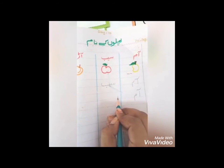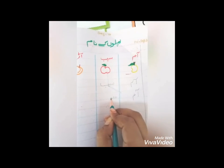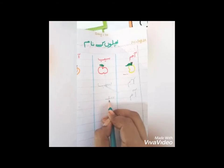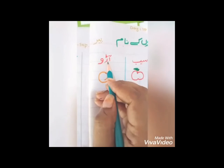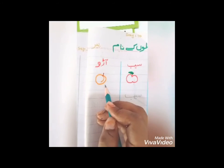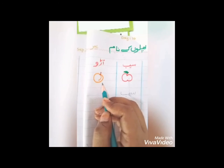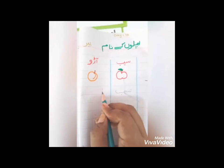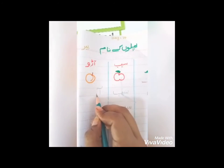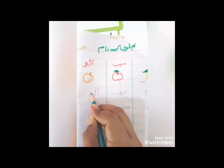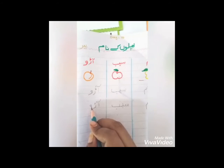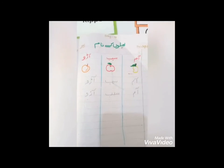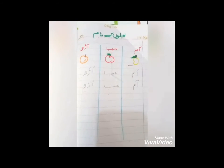First write with me — seen ke aadi ashkaal (initial form of seen), ye ke aadi ashkaal, and be — seb. Next, look — which fruit is this? Which picture is this? Aadu (peach). What do we call this in English? Peach. How to write it? Alif madda laam waaw — aadu. This is our Urdu work — complete this page by reading along with your mother.